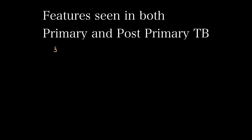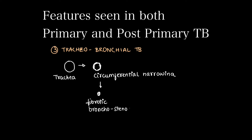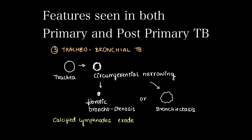Moving on to tracheobronchial involvement of tuberculosis: TB can cause granulomatous inflammation of the trachea causing circumferential luminal narrowing. This can lead to fibrotic bronchostenosis or bronchiectatic changes. Calcified lymph nodes, either hilar or mediastinal, can erode into the bronchi and cause broncholith formation.